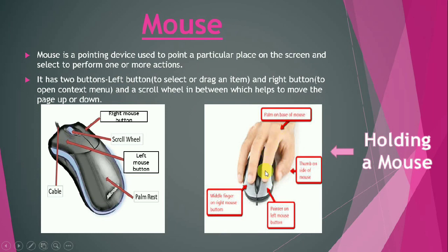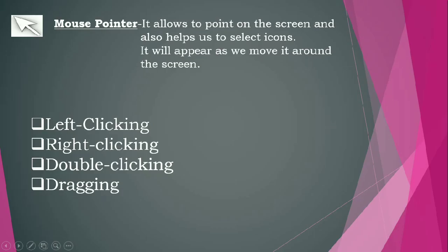Your palm should be on the base of the mouse, and your thumb should be at the side of the mouse. The first finger — the index finger — should be on the left button, the middle finger should be on the right mouse button, and the rest of the fingers to the side. While holding a mouse, you should take care of these things.